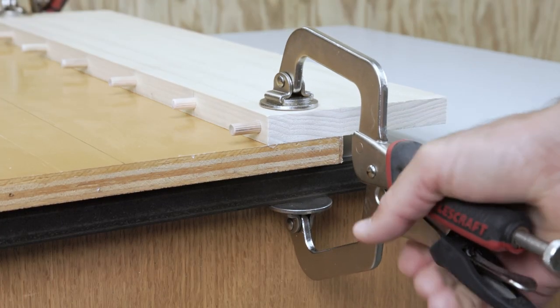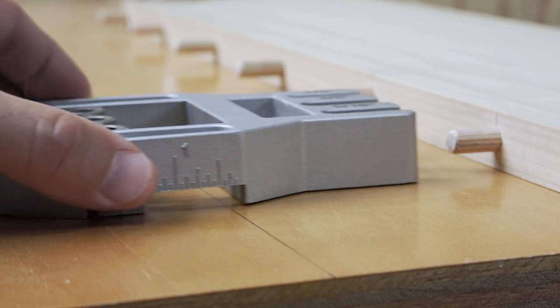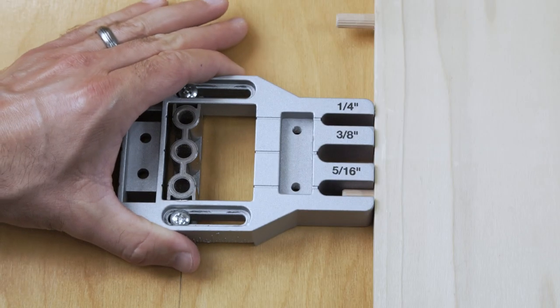When creating surface joints, the three dowel alignment slots easily help you transfer the edge dowel position to the face of your board.